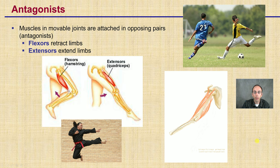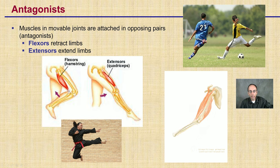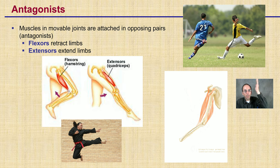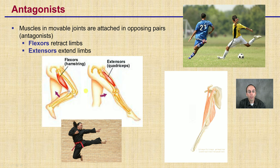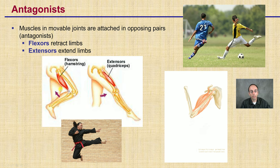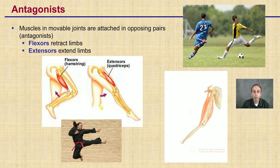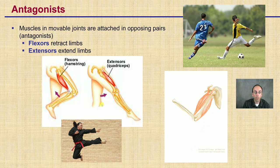Flexors are retracting the limb, pulling it in one direction, while extensors are extending that limb. We see this with the hamstring compared to the quadriceps. For a kicking motion, like in soccer, the flexors — the hamstring — pull the leg back, and then the extensors — the quadriceps — extend the leg forward, allowing the individual to kick the ball.